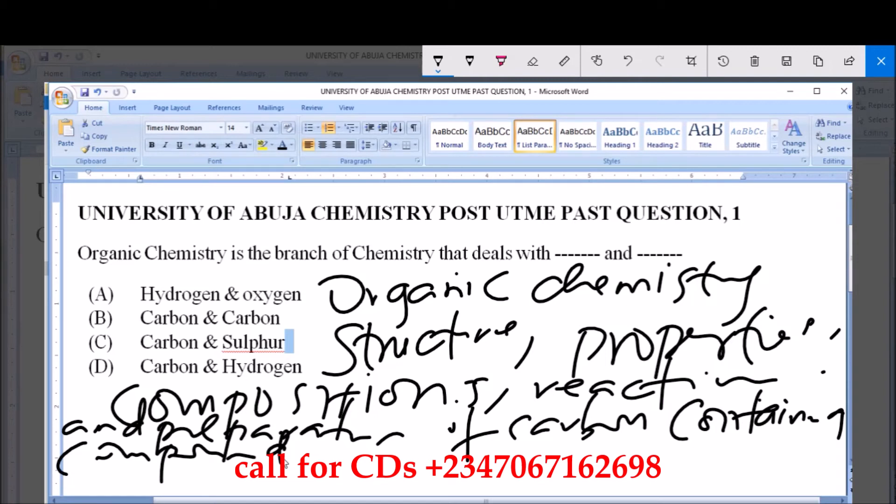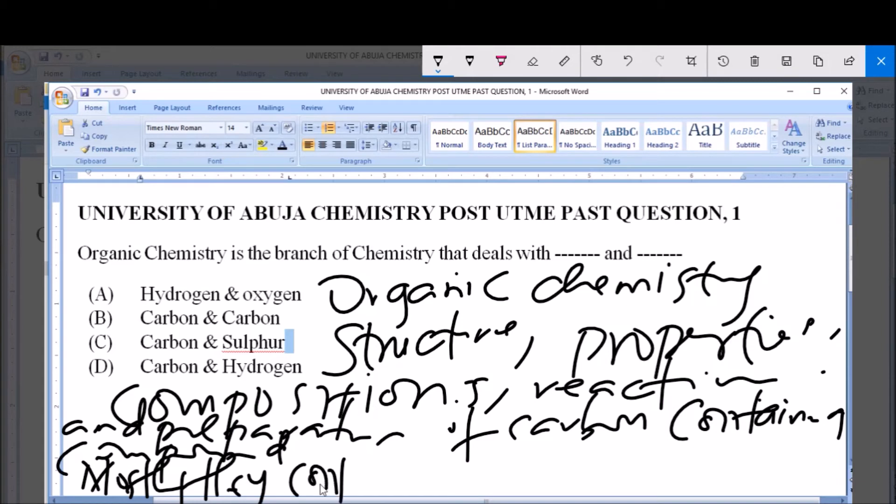Mostly they contain at least one carbon-hydrogen bond. They contain at least one carbon-hydrogen bond, and the main elements of an organic compound are carbon and hydrogen.